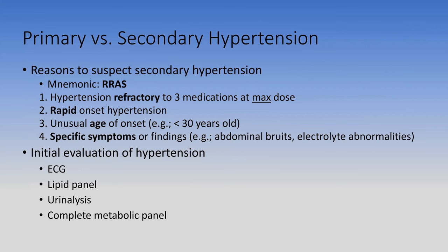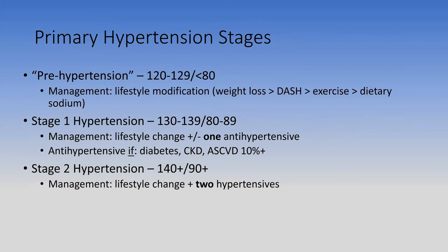For primary hypertension, the initial evaluation includes four tests: ECG, lipid panel, urinalysis, and complete metabolic panel. The CMP identifies electrolyte abnormalities; UA checks for kidney damage or secondary glomerular disease; the lipid panel can key into metabolic syndrome; and ECG establishes a baseline. If the question gives you an option for one of these four that hasn't been done, choose that one.